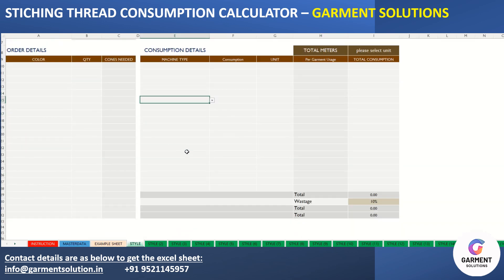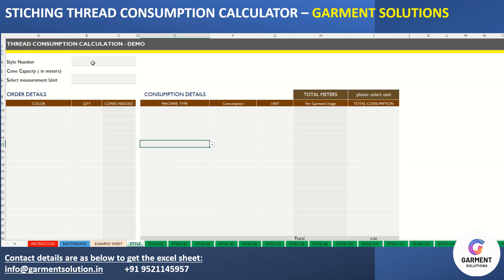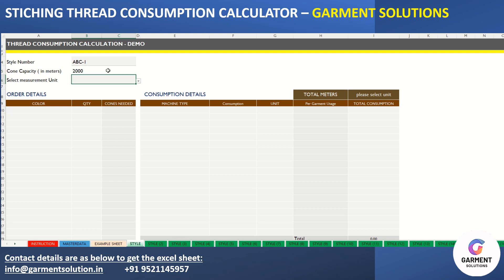There will be separate style sheets. For example, we work on one style — the number is ABC1. Room capacity is normally 2000 meters, which you can change as per your convenience. The measurement unit can be set to inches or centimeters as per your working.